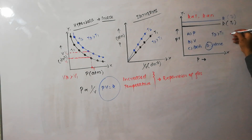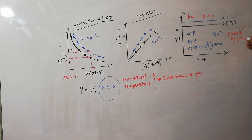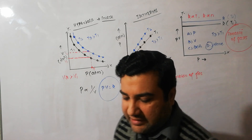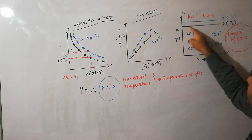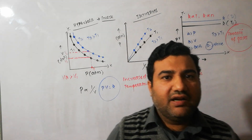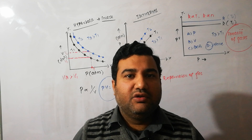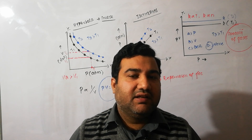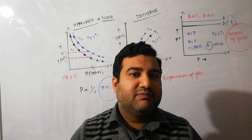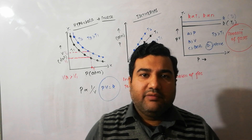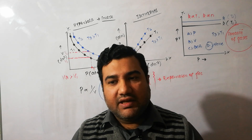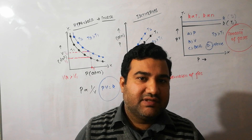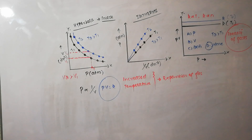The PV vs. pressure graph is very important because it is used to check the ideality of gases. Real gases do not show a straight line parallel to the x-axis — their values change. There will be a topic in this chapter titled 'Non-ideal behavior of gases,' where I will discuss how this graph explains ideal behavior. This was all about Boyle's Law. In the next lecture, we will come up with Charles's Law.